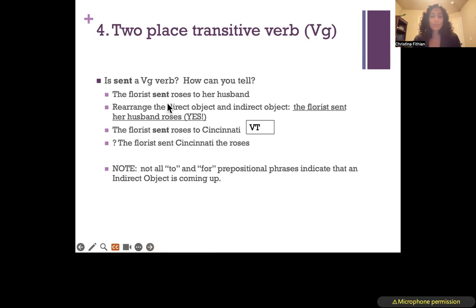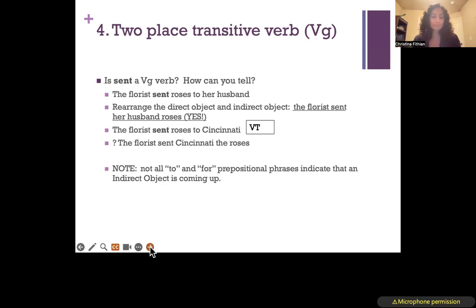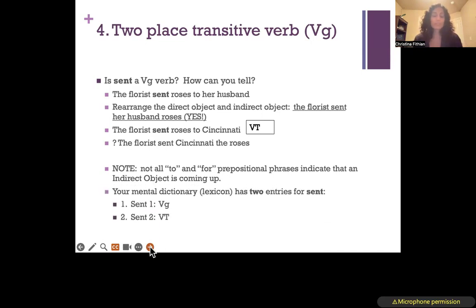This points to an important concept: verbs can actually change their type depending on the sentence context. The category of a verb is not fixed until it's situated in the sentence. So your mental dictionary — your lexicon — actually has two entries for sent: one as a VG in certain contexts and another as a VT in others.